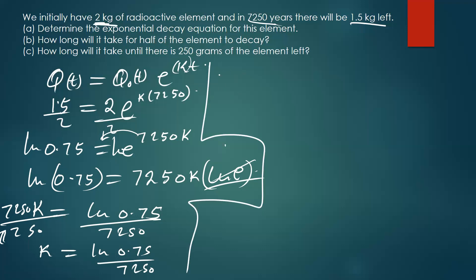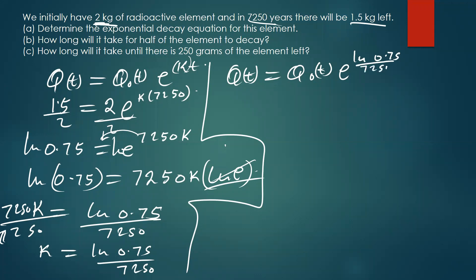So the exponential decay equation is q(t) = q₀ × e to the power [ln(0.75) / 7250] × t. This is the exponential decay equation. The second part of the question asks: how long will it take for half of the element to decay?